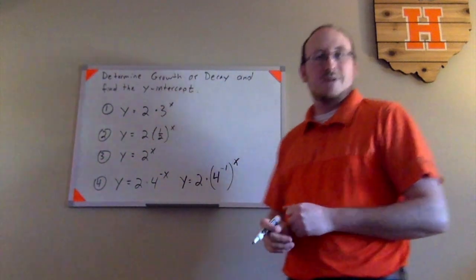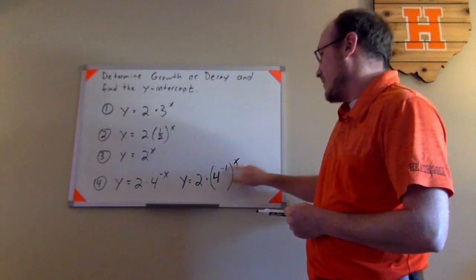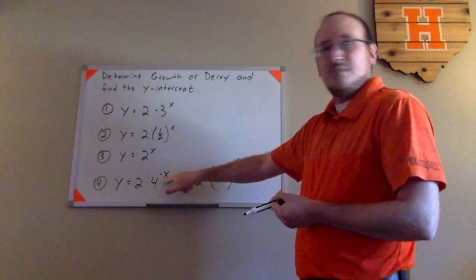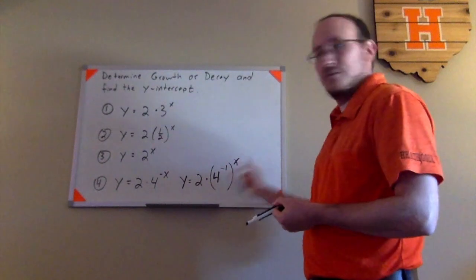So negative 1 times x here would just be negative x, so I've written something equivalent here. Well, now think back to Algebra 1 a little bit. You had a negative exponent rule.